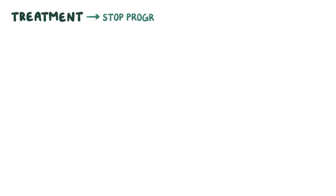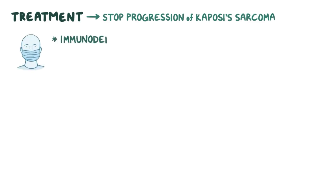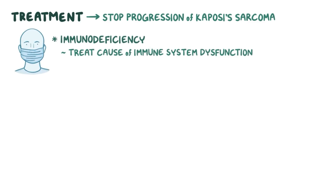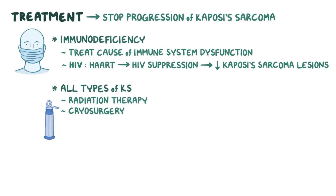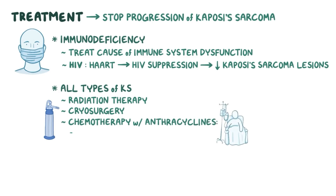Treatment is mainly aimed to stop the progression of Kaposi's sarcoma, as the disease is not curable. When it occurs in individuals with immunodeficiency, treating the cause of the immune system dysfunction can slow or stop the progression of KS. For example, in HIV-infected individuals, treatment is done using highly active antiretroviral therapy, or HAART, which leads to HIV suppression that may shrink Kaposi's sarcoma lesions. In all types of KS, skin lesions can be treated with local measures such as radiation therapy or cryosurgery. In cases of widespread disease with involvement of internal organs, chemotherapy can be used with anthracyclines such as doxorubicin, liposomal doxorubicin, thalidomide, or paclitaxel.